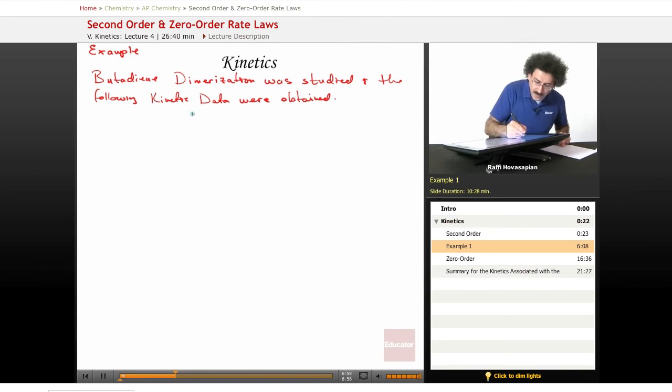Okay, so let's go ahead and write out the formula. C4H6 turns into C8H12.